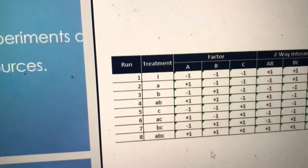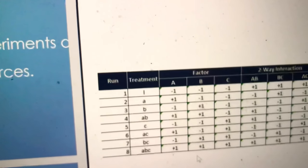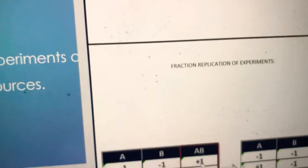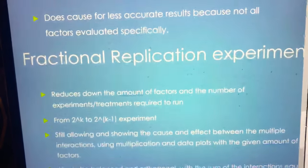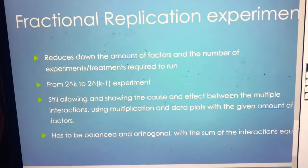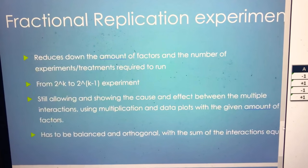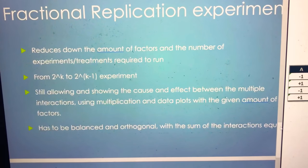By using a fractional replication of experiments, we could reduce this to 4. It reduces it to 2 to the k minus 1. It still gives us accurate results and can show the cause and effect.